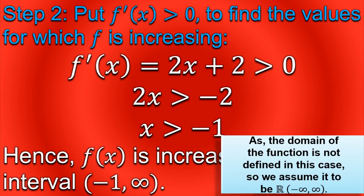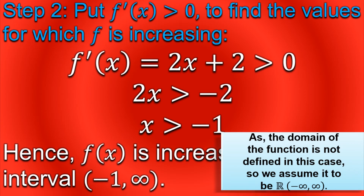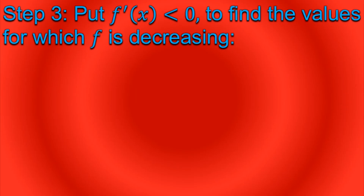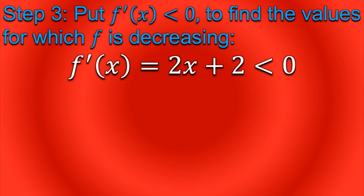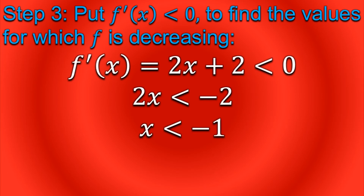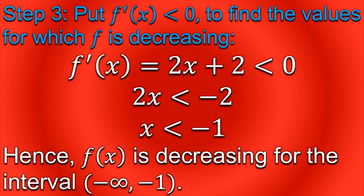As the domain of the function is not defined in this case, we assume it to be the set of real numbers, which is from negative infinity to positive infinity. Step three is to put f'(x) < 0 to find the values for which f is decreasing. By doing so, we obtain that for x < −1, f'(x) is negative. Hence, f(x) is decreasing on the interval (−∞, −1).